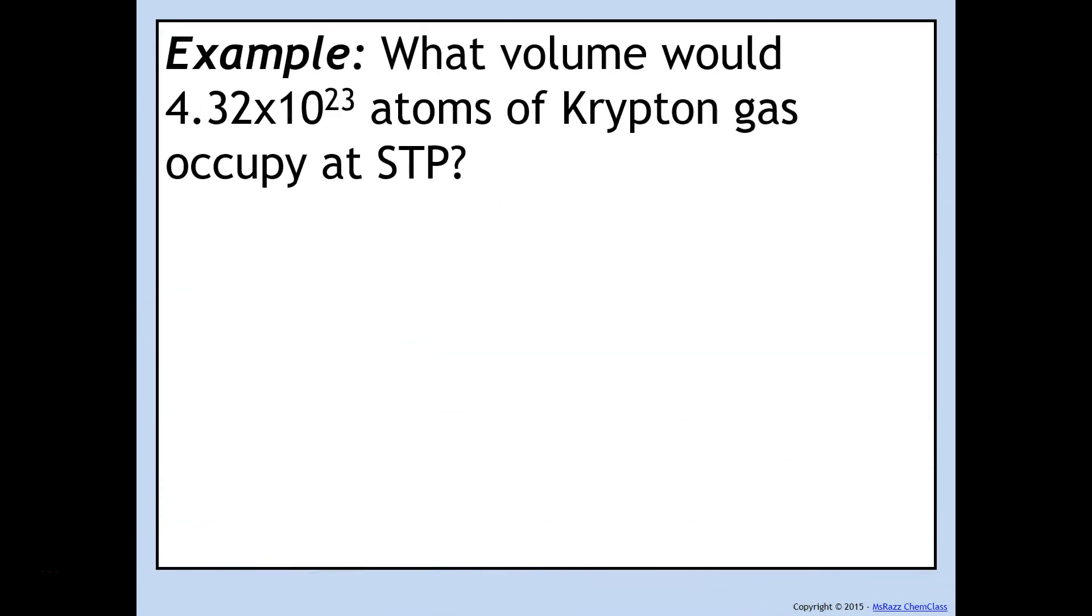So, let's try an example. So, it says what volume would 4.32 times 10 to the 23rd atoms of krypton gas occupy at STP? So, we'll start with our known, which is 4.32 times 10 to the 23rd atoms of krypton. Our unknown is how many liters of krypton. So, we'll start with our 4.32 times 10 to the 23rd atoms. We'll put it over one like usual.